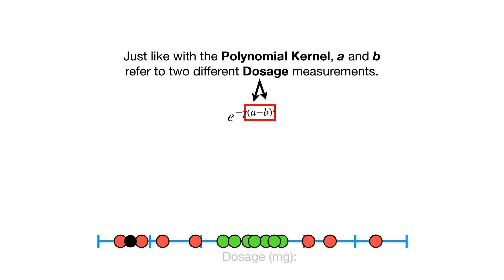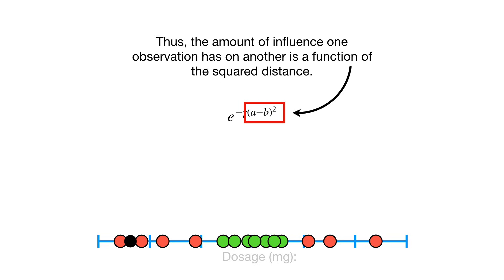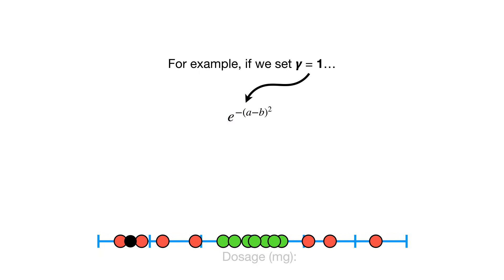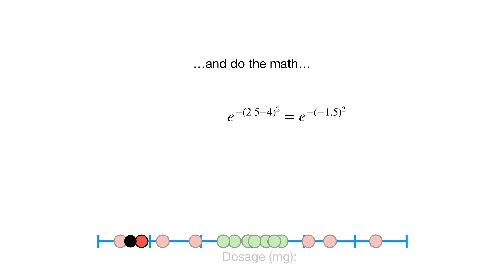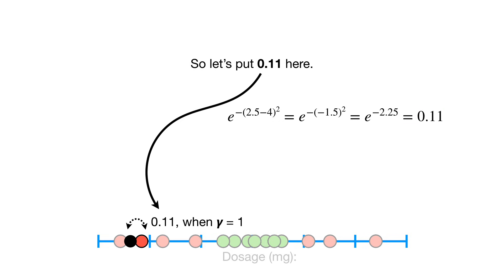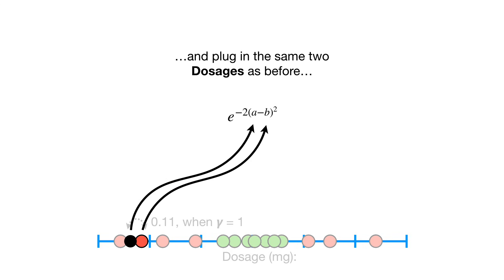Now let's talk about how the radial kernel determines how much influence each observation has on classifying new observations. Just like with the polynomial kernel, A and B refer to two different dosage measurements. The difference between the measurements is then squared, giving us the squared distance between the two observations. Thus, the amount of influence one observation has on another is a function of the squared distance. Gamma, which is determined by cross-validation, scales the squared distance, and thus it scales the influence. For example, if we set gamma equal to 1 and plug in the dosages from two observations that are relatively close to each other and do the math, we get 0.11. Now let's set gamma equal to 2 and plug in the same two dosages.